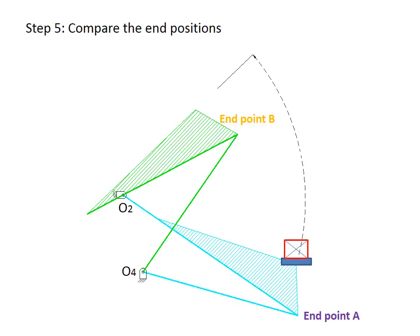Now, drawing both end points, we can see the movement of the box as it travels from one endpoint to the other. The dotted line shows the angular stroke of this mechanism.